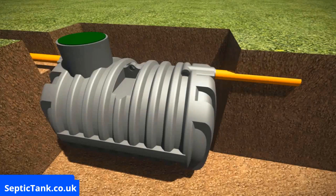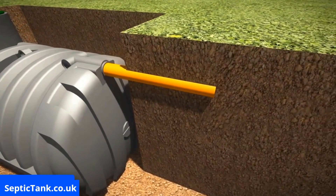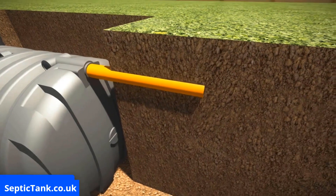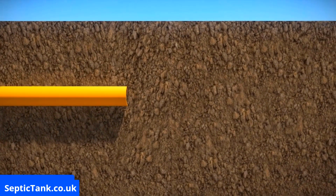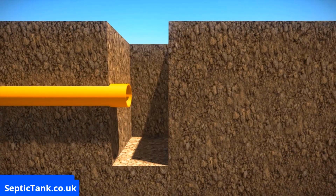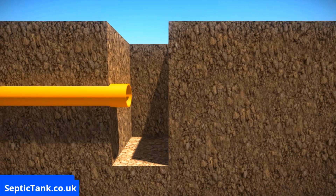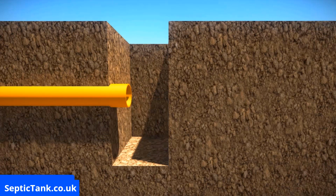To carry out a percolation test, first work out where you're going to install your septic tank, then work out where the outlet pipe will be. Once you've done that, dig a hole 300mm square to a depth of 300mm below the level of the outlet pipe. Then fill the 300mm square section of the hole to a depth of at least 300mm of water and allow it to seep away overnight.